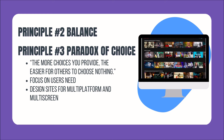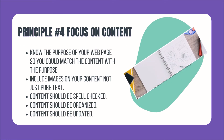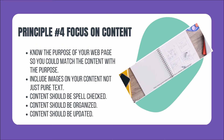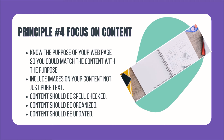Principle number three is Paradox of choice — the more choices you provide, the easier it is for others to choose nothing. Focus on the user's needs and design sites for multiple platforms and multiple screen sizes. Principle number four is Focus on content: know the purpose of your web page so you can match the content with the purpose, include images not just pure text, ensure content is spell-checked and organized.